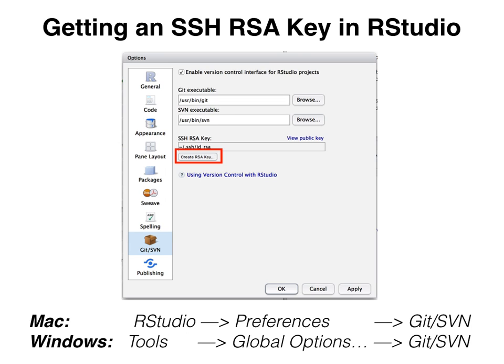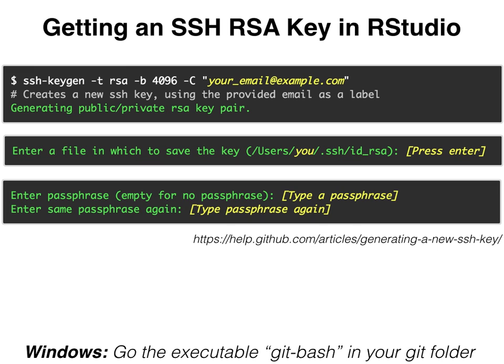If it was successful, you should now see a file path listed. If it was unsuccessful and you got some error message, which is possible on a Windows machine, you're going to have to make your key back in the terminal the same way you configured git. Go back to the terminal or the git bash executable and type in the SSH keygen command. When it gives you the option of which file to save it in, simply press enter. The passphrase is again optional. I'll give you a moment to do this — continue the video when you're ready.